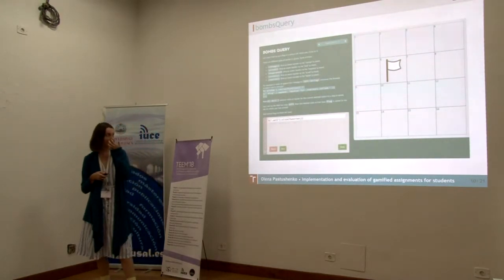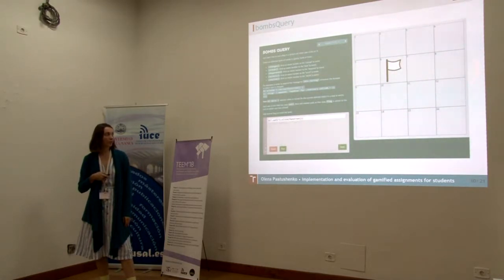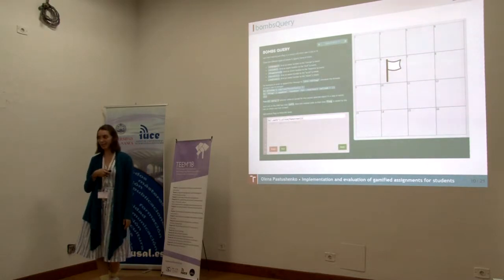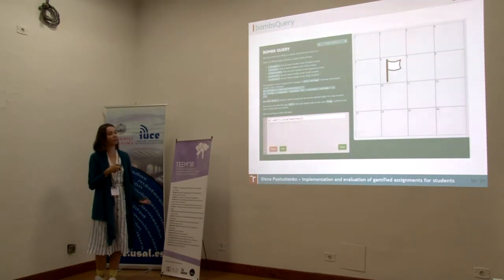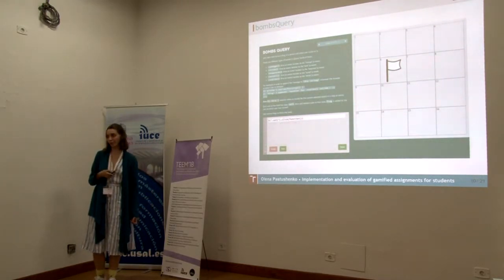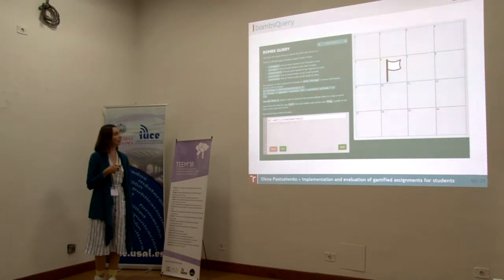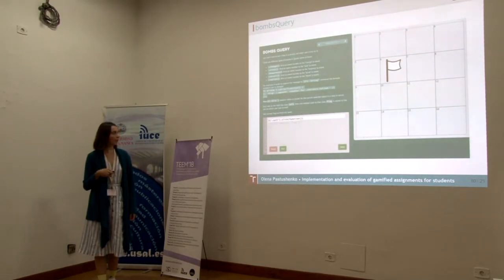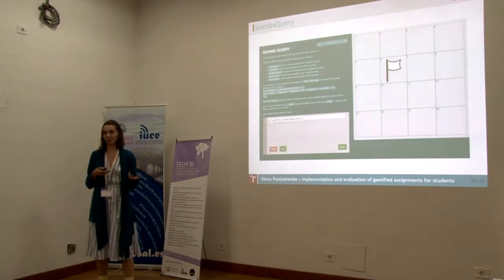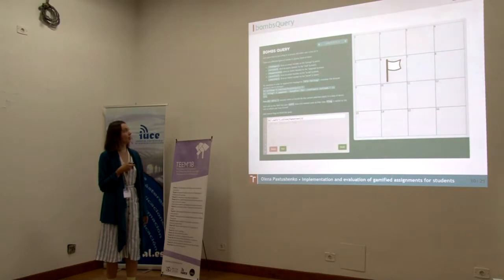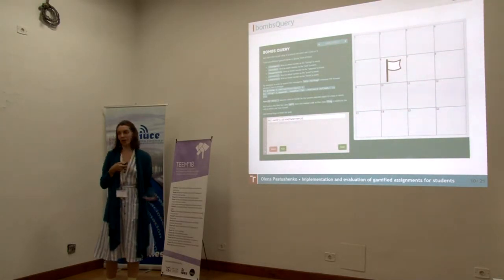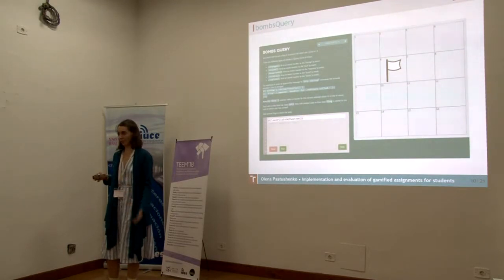Here is a screenshot of the gamified assignment. The narrative was to eliminate all bombs from the field by marking them with white flags. To place a flag, students had to complete some part of jQuery code — the assignment was aimed at teaching jQuery basics. They had some theory, some hints, and a clear description of what they needed to achieve. Whenever they entered code, it was checked automatically, and if correct they would proceed to the next level. There was also a progress bar showing how many levels they still needed to complete.